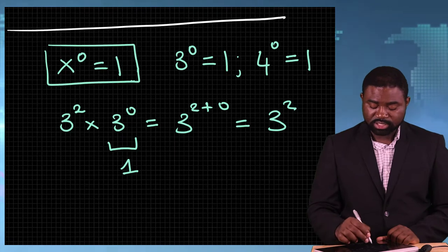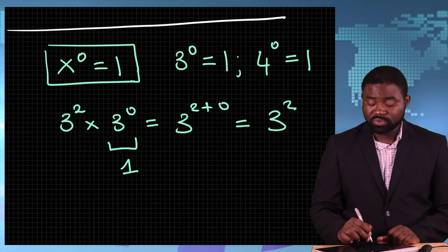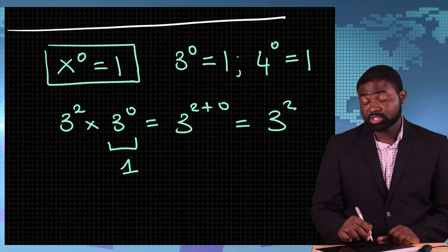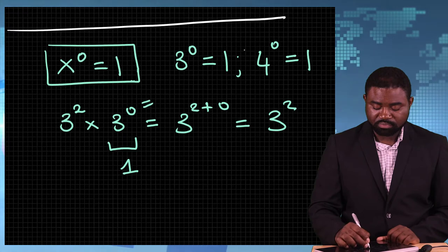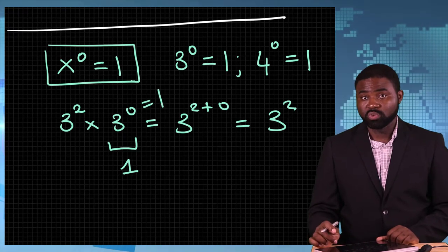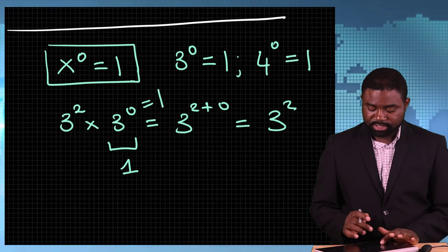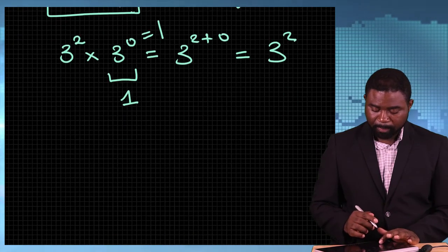Hence, it is logical for us to conclude that 3 raised to the power 0 must be equal to 1. That makes sense to me.